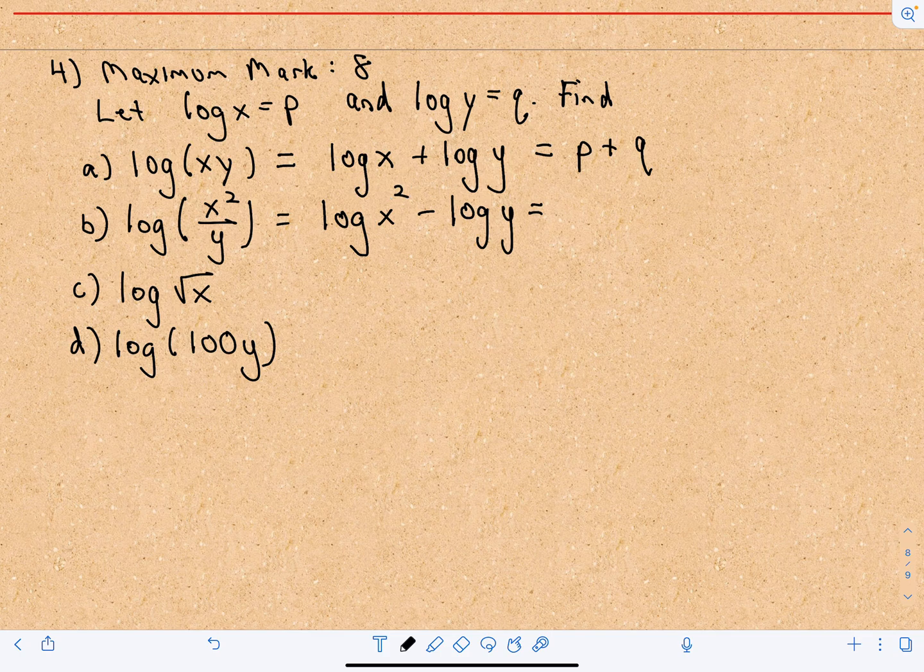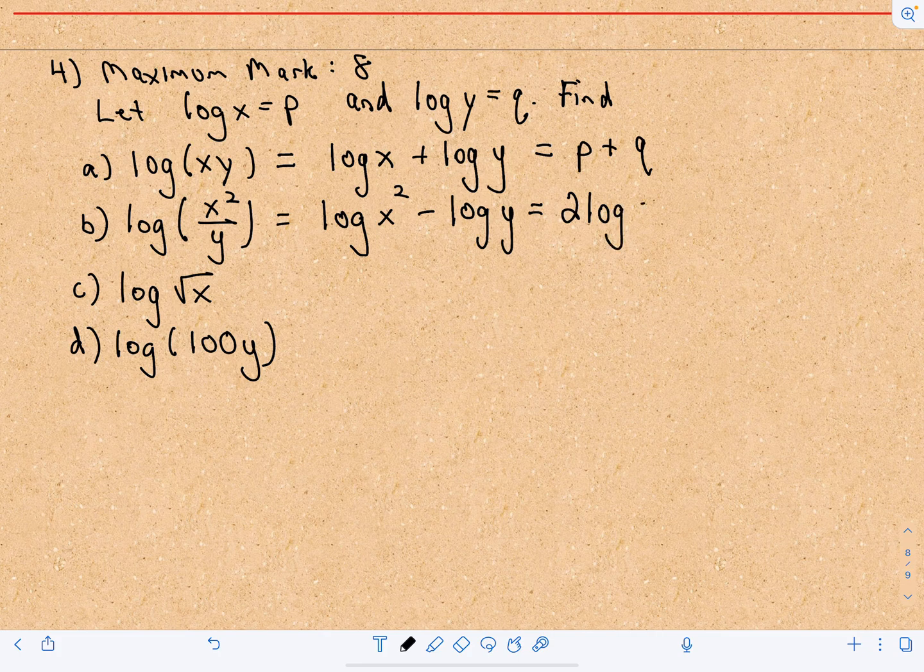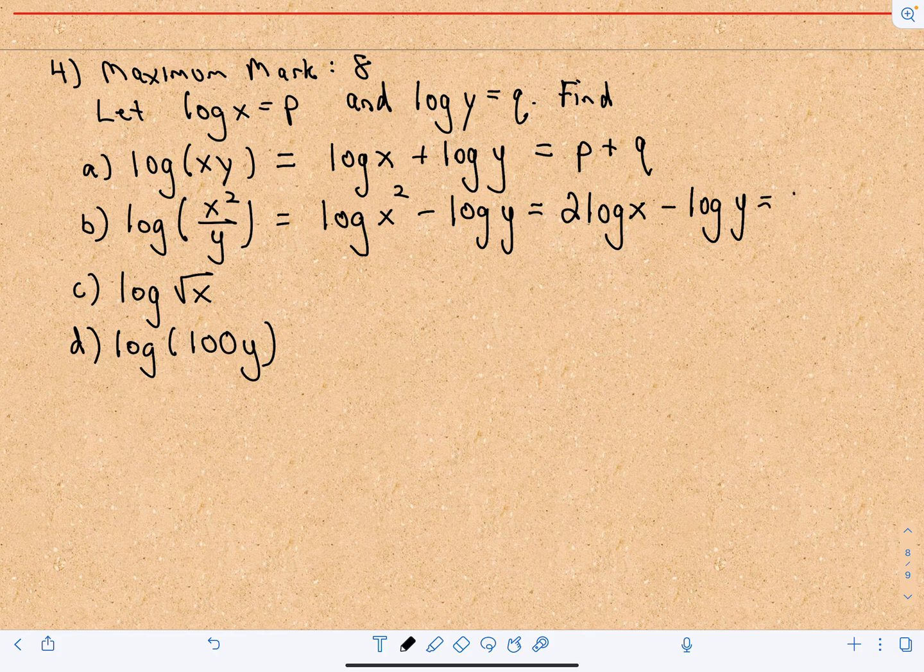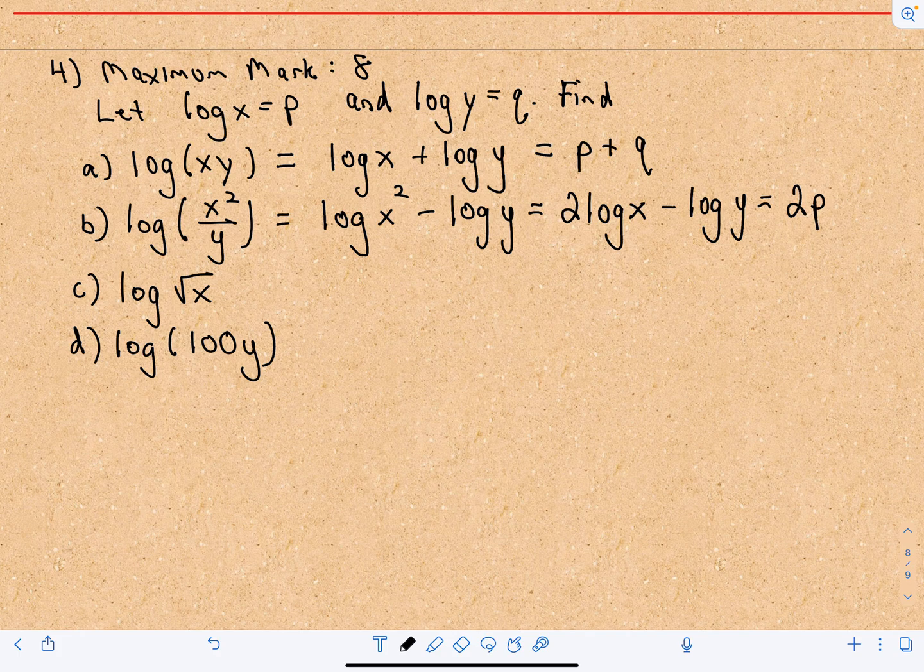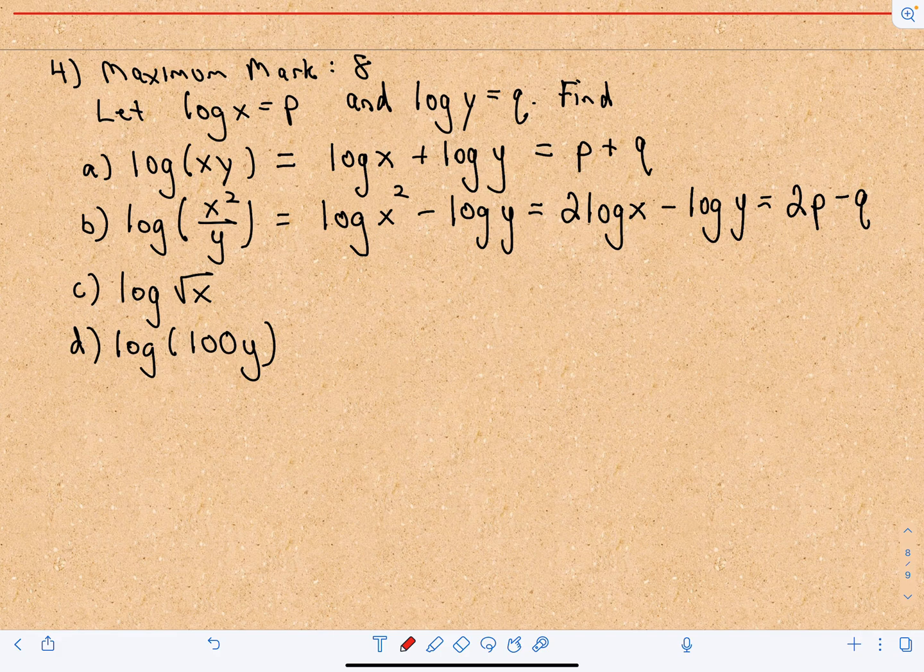So that first expression is going to turn into two times log of X. Again we have minus log of Y and we'll just replace. So now we're going to have two times, well log of X is equal to P and log of Y is equal to Q. So we'll be left with the expression 2P minus Q.